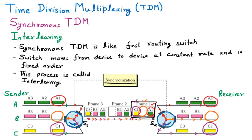Interleaving is the process where the switch moves from one device to another and takes the data. We can compare this switch to a fan regulator. If there is a 3-speed regulator, it goes to 1, 2, and 3, and then moves back to 1. Similarly, it takes data from device 1, 2, and 3, and moves back to 1. These two routing switches are synchronized — one is receiving and another is sending — and multiple frames can be sent. Frame 2 and frame 3 are sent for corresponding packets of the sender. This is called interleaving under synchronous TDM.